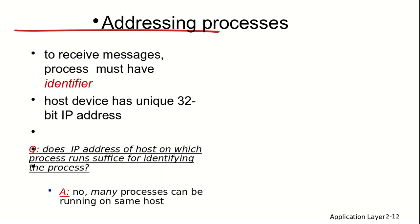To receive messages, a process must have an identifier. The host device has a unique 32-bit IP address, but the IP address alone is not sufficient to identify a specific process, since multiple processes on the same host may be communicating over the network. A process is identified by a port number, and the information is forwarded to the relevant application associated with that port number.